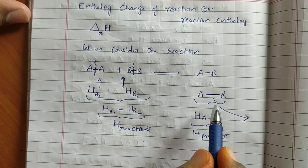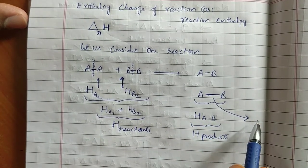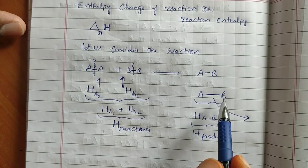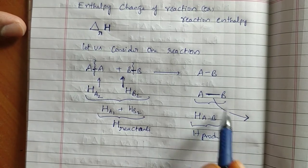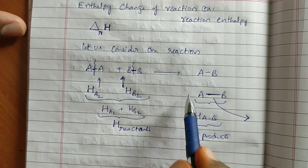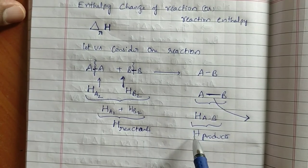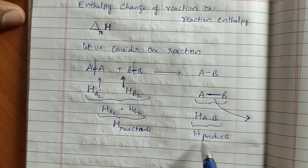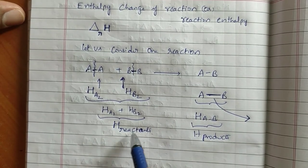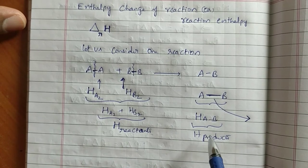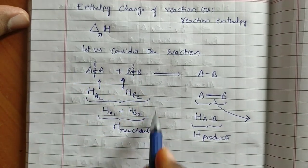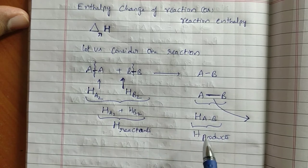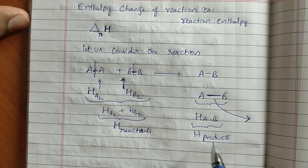Some amount of energy is released to the surroundings, and the remaining amount of energy stays with AB. For example, suppose 10 joules of energy must be present — if 5 joules is released, the remaining 5 joules is the heat energy of products. So this side is enthalpy of reactants, and this side is enthalpy of products.